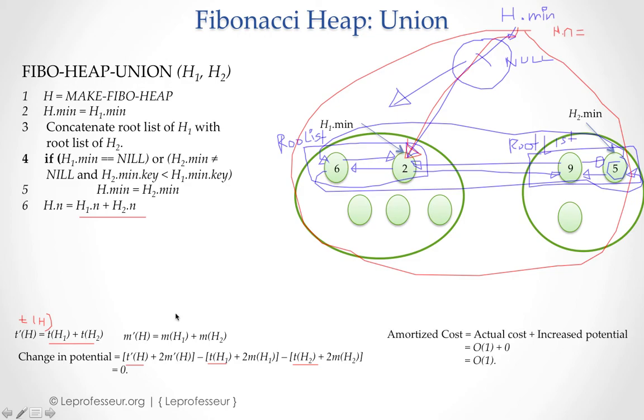And we get the potential difference zero. So what does it mean? It did not impact our time complexity or number of operations. So amortized cost would be actual cost plus increased potential. Now we did not have any change in potential, so that value is zero and so we arrive at O(1) complexity for this algorithm.